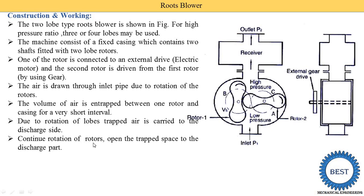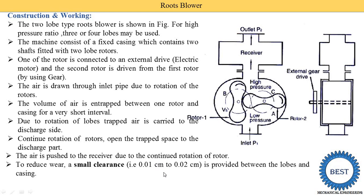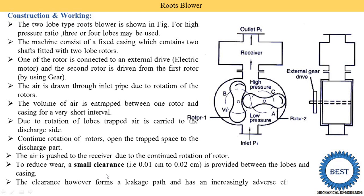Continuous rotation of the rotor opens the trapped space to the discharge port, and the air is pushed to the receiver due to continuous rotation of the rotor. To reduce wear, a small clearance of 0.01 cm to 0.02 cm is provided between the lob and the casing. However, this clearance forms a leakage path — compressed air leaks through this clearance — which has an increasing adverse effect on efficiency as the pressure ratio increases.